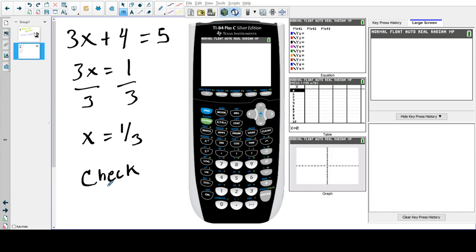Now to check this, you would substitute 1/3 for x. So you would get 3(1/3) + 4. You would put this in your calculator and hopefully it would equal 5. Let's see.